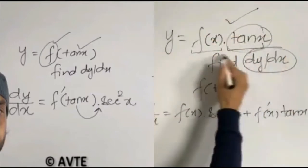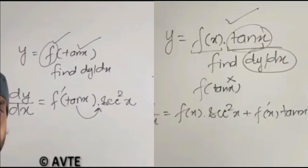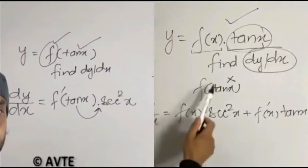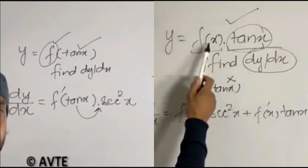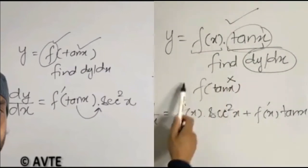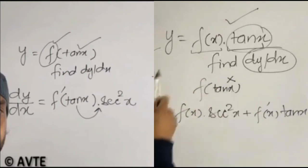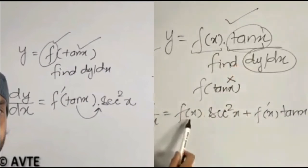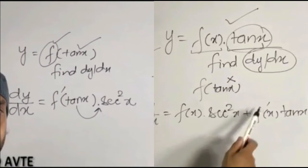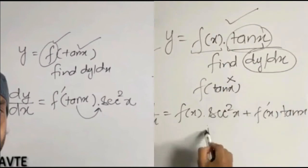So in this case we have to apply the product rule and you need to know that these two are different things. This is f x into tan x and the thing which we have done previously is f of tan x. So the derivative of y equals f x tan x is f x secant square x plus f dash x into tan x which is the product rule.